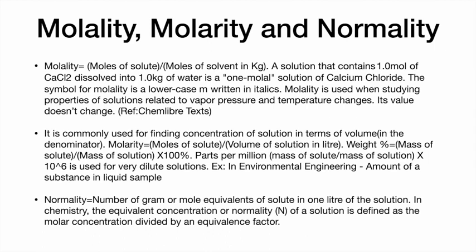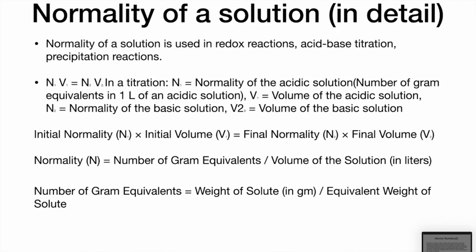Normality is the number of gram or mole equivalents of solute in one liter of solution. In chemistry, the equivalent concentration or normality of a solution is defined as molar concentration divided by the equivalence factor. Normality is used in redox reactions (where reduction and oxidation take place simultaneously), acid-base titrations, and precipitation reactions. In high school titration, we use V₁N₁ = V₂N₂: normality of the acidic solution × volume of acidic solution = normality of the basic solution × volume of the basic solution.